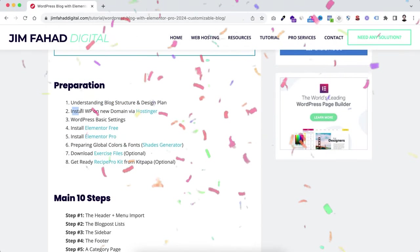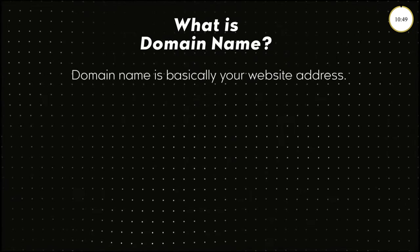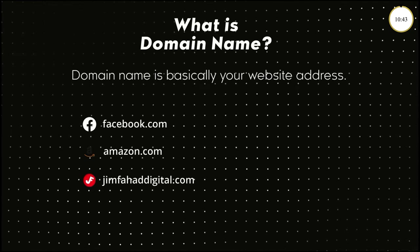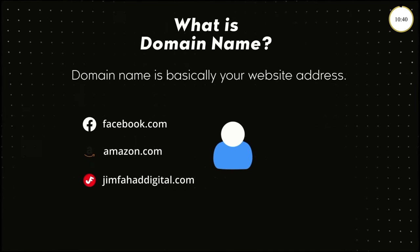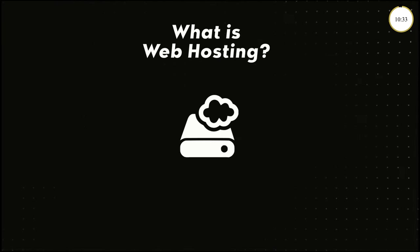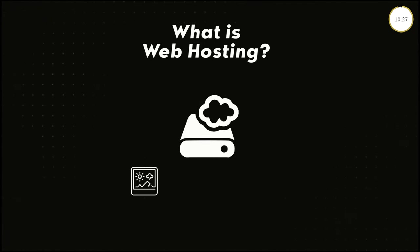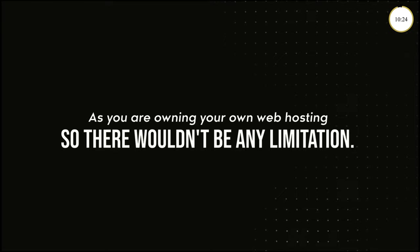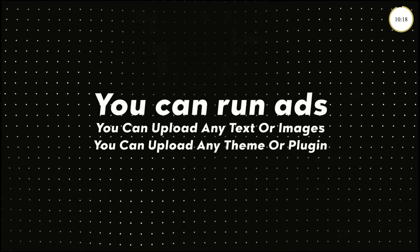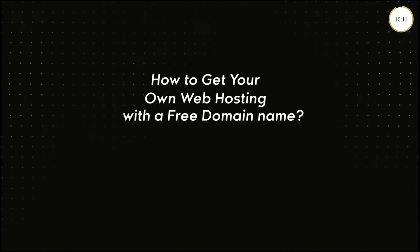Preparation two is installing WordPress on a new domain via Hostinger. First, what is a domain name? A domain name is your website address — like facebook.com, amazon.com, or jimfahaddigital.com. For your website you need an address like yourwebsitename.com. Web hosting is the storage space for your website — all images and text will be stored on your web hosting. Since you own it, there's no limitation: you can run ads, upload any text, images, themes, or plugins you want. You are in charge of your own website.